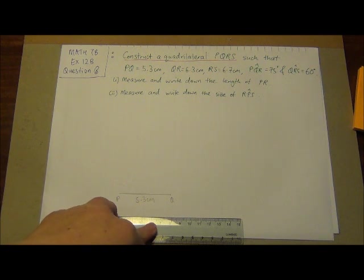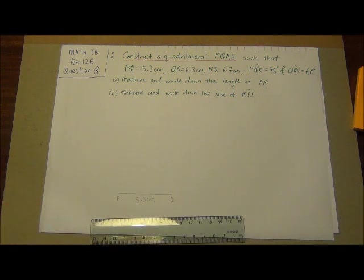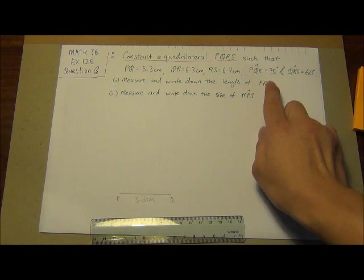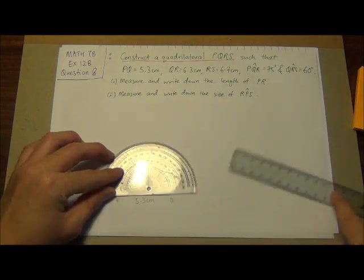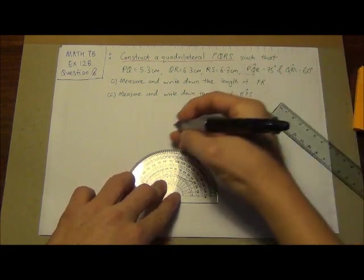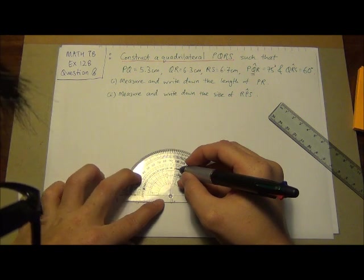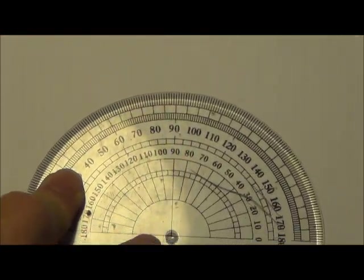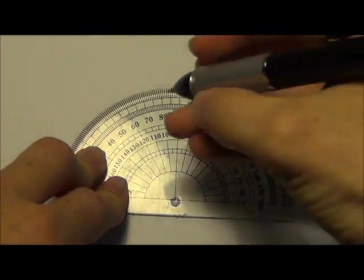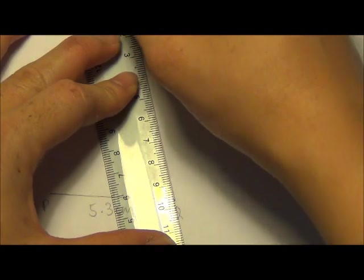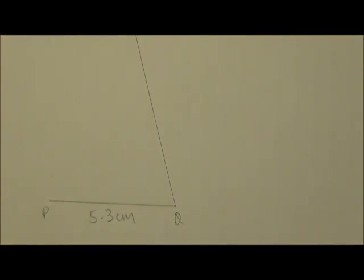Next, QR is equals to 6.3, and RS equals to 6.7. I can't really denote how it will be. So next, I will take the next one, the next angle PQR equals to 75 degrees. So I'll take a protractor. I'll label and measure 75 degrees for angle Q. Angle Q is 75 degrees. So therefore, over here, I will mark it off as 75 degrees. Let me zoom in to show you. So 75 degrees, I'll mark it off here. And I will draw a straight line.